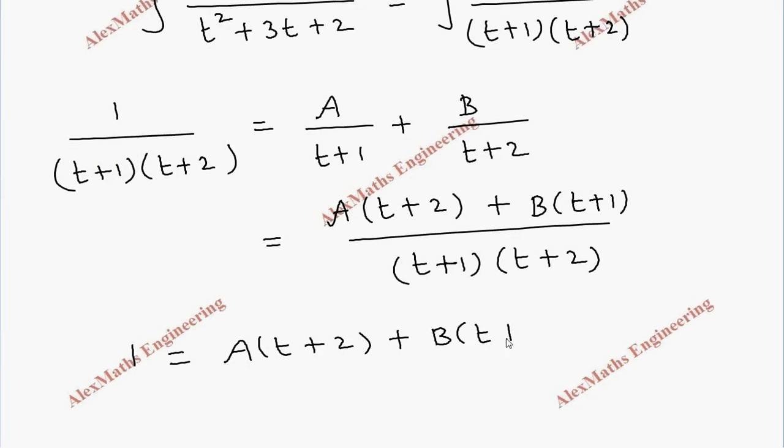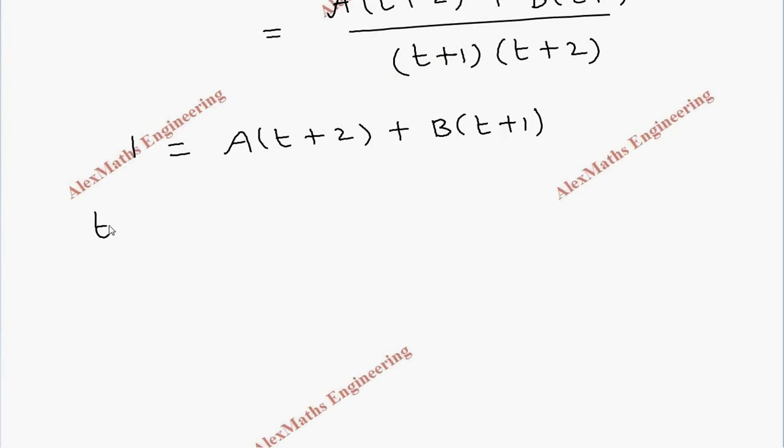We have to take some suitable value of t to find the values of A and B. Let's take minus 2, so we get 1 equal to minus B. From this, the value of B is minus 1.